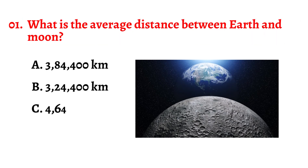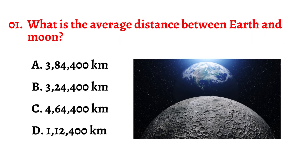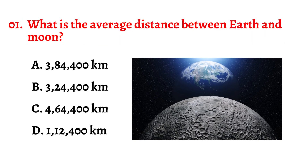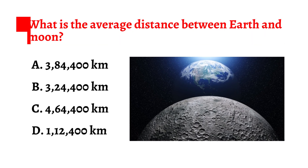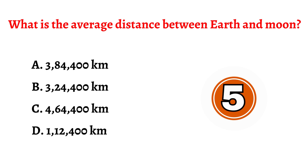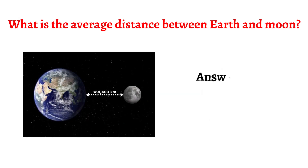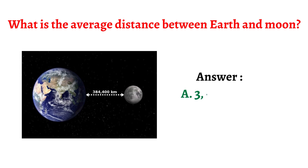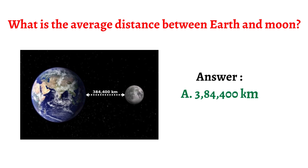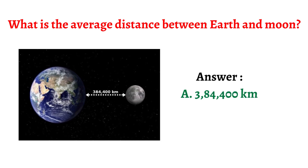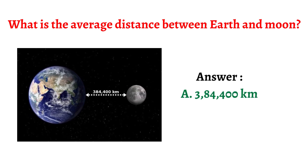Question number one: What is the average distance between Earth and Moon? The correct answer is option A: 384,400 kilometers.